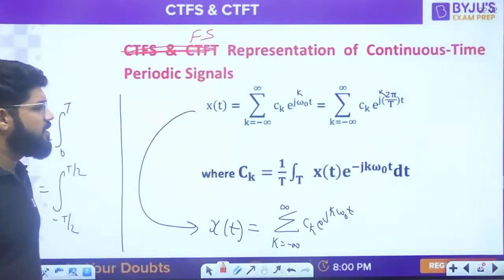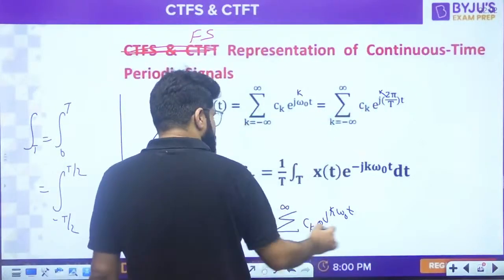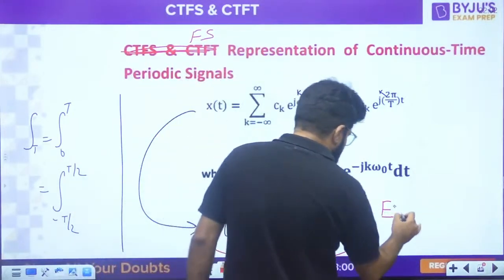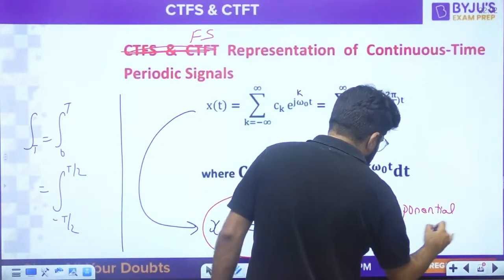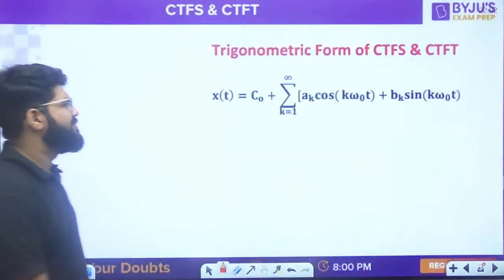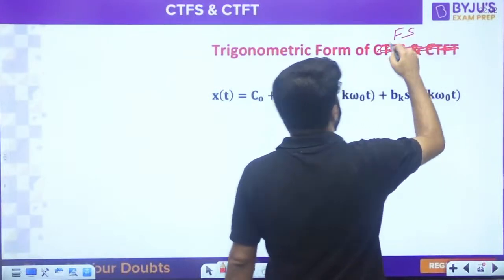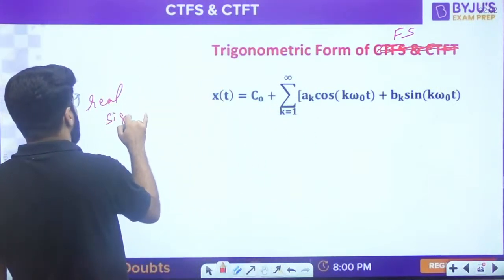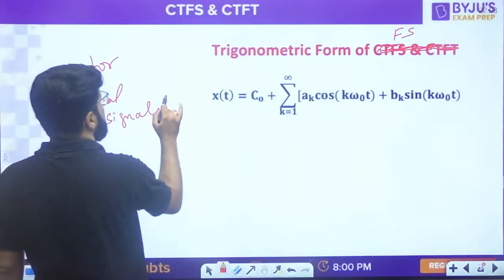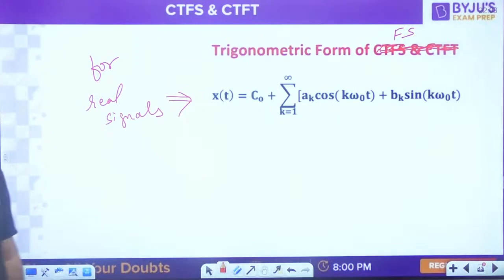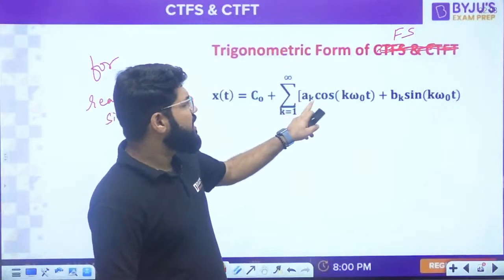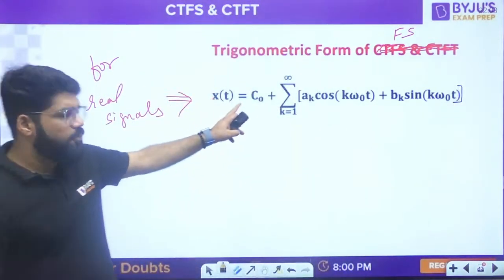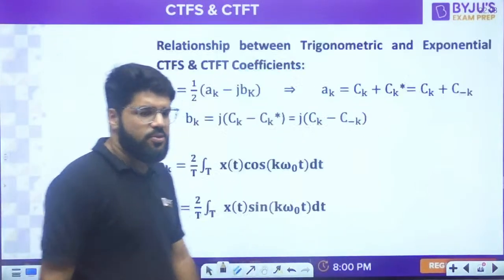The trigonometric Fourier series form: x(t) = C₀ + Σ[aₖcos(kω₀t) + bₖsin(kω₀t)]. This exponential form is the most general form; the trigonometric form is defined only for real signals. It contains three terms: DC component, cosines, and sines.